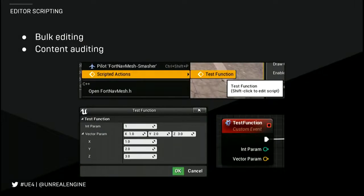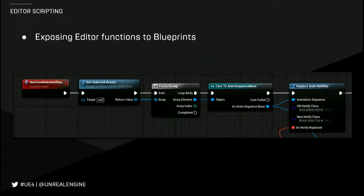When it came to modifying large amounts of content, we started using editor scripts. We used Blueprints to do this, but we now have experimental Python support in the engine, and anything we expose to Blueprints on the editor side is also exposed to Python. You can create a special kind of Blueprint called a scripted action in the editor, select some assets, right-click, and run that Blueprint on those assets at editor time. You can even enter some input properties and run the logic. We're going to be spending more and more time exposing editor functionality to this system, because we found it really useful for auditing content and making bulk modifications. The artist will talk a little bit about some of the other things they did with this in the second part of the talk.